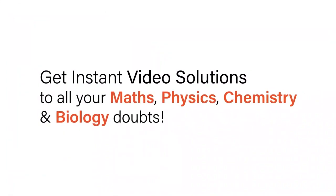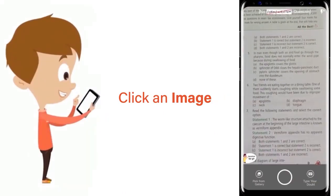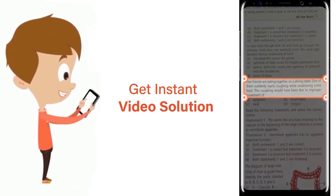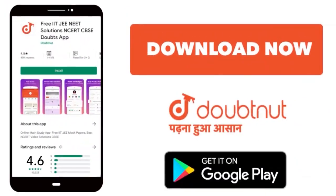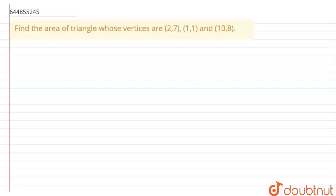With Doubtnut, get instant video solutions to all your maths, physics, chemistry, and biology doubts. Just click the image of the question, crop the question, and get instant video solution. Download Doubtnut app today. So hello my dear students, welcome to Doubtnet. The given question is: find the area of the triangle whose vertices are (2,7), (1,1), and (10,8).